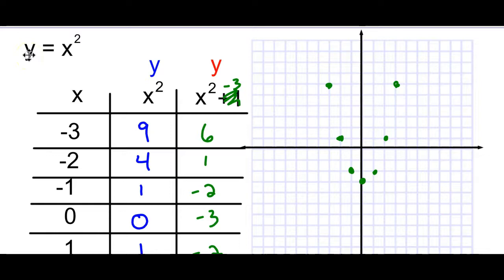So what makes the function go left and right? What makes it flip? And what makes it stretch or compress vertically? Those are the next things we need to figure out.